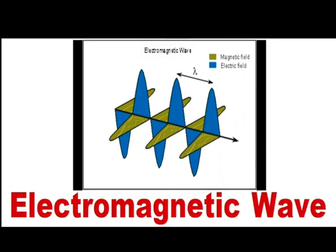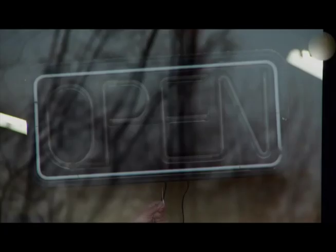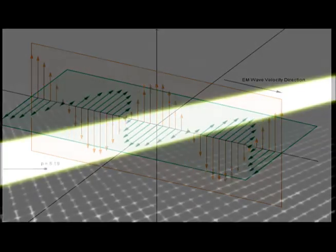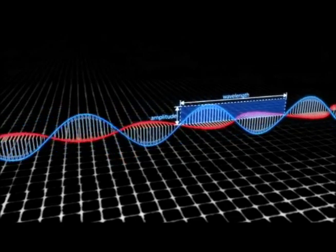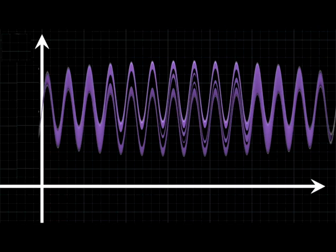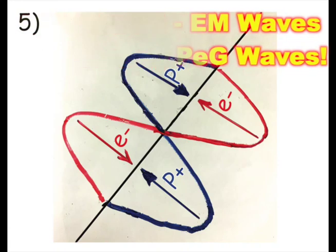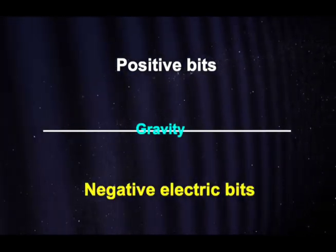Next are electromagnetic EM waves. Today, our radios, smartphones, and lights all work because of something called electromagnetic or EM waves. The old theory guesses that EM waves are made by wavy bits of electric fields with bits of right-angle magnetic fields. What if this old idea is incomplete? Here is the new theory: EM waves are actually PEG waves — made of a positive bit, a negative bit, and a bit of gravity in between. A PEG sandwich.